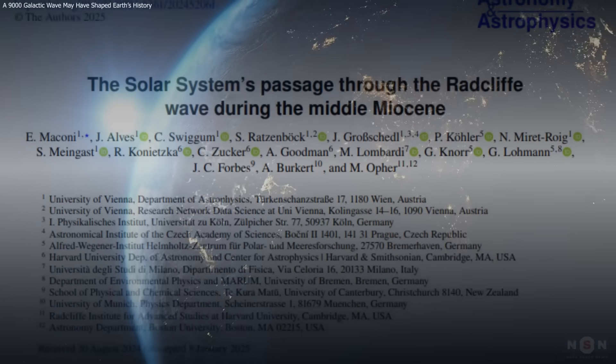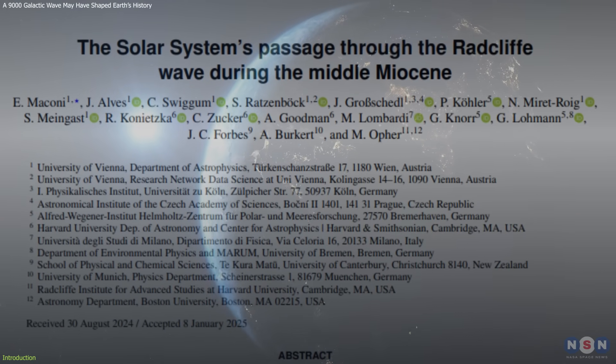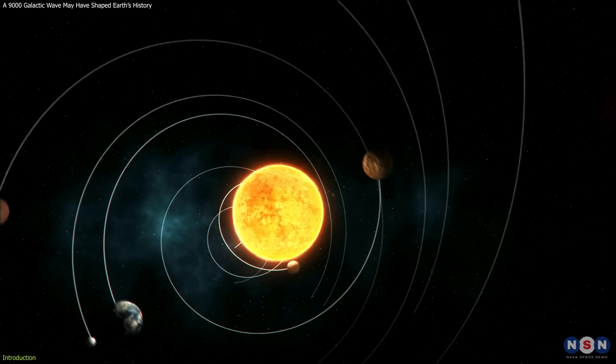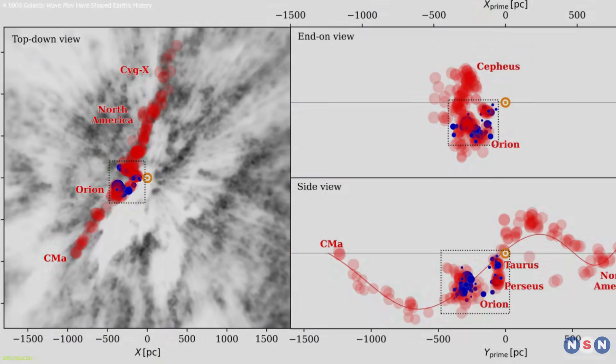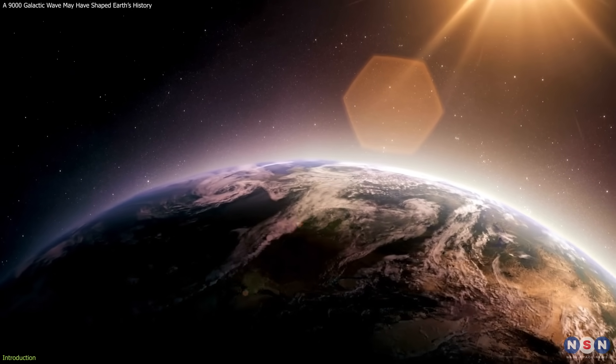Recent astronomical research has unveiled that approximately 14 million years ago, during the Miocene epoch, our solar system traversed a colossal galactic structure known as the Radcliffe Wave. This monumental event may have had profound implications for Earth's climate and evolutionary trajectory.